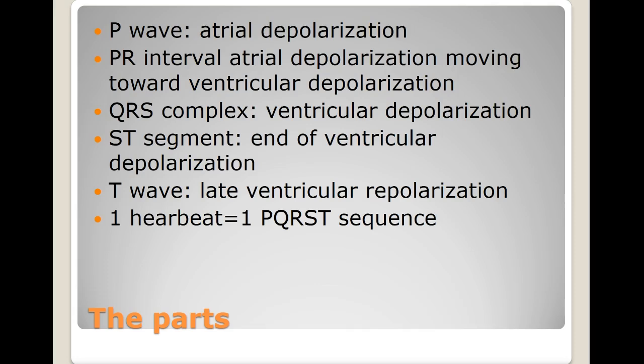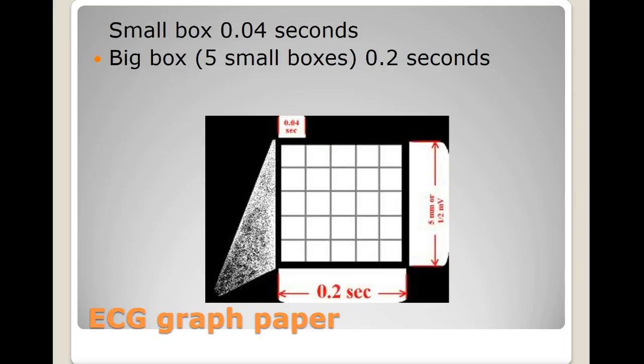The QRS complex is the most recognizable part and it's the tall wave wedged between the P and T wave. Even though it's always called a QRS complex, sometimes it doesn't contain a Q or an S, but it will always contain an R. The ST segment is the end of ventricular depolarization. The T wave is late ventricular repolarization or relaxation, allowing for refilling of the ventricles. So each heartbeat ideally should contain a P-QRS-T sequence.